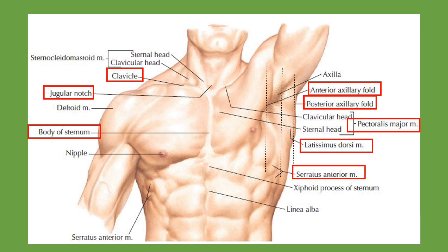The serratus anterior muscle is also a landmark. Similarly, there are three imaginary lines passing from the axilla: the anterior axillary line, the posterior axillary line, and the middle axillary line, as seen in the diagram. These three lines have clinical importance when we talk about the thoracic region.